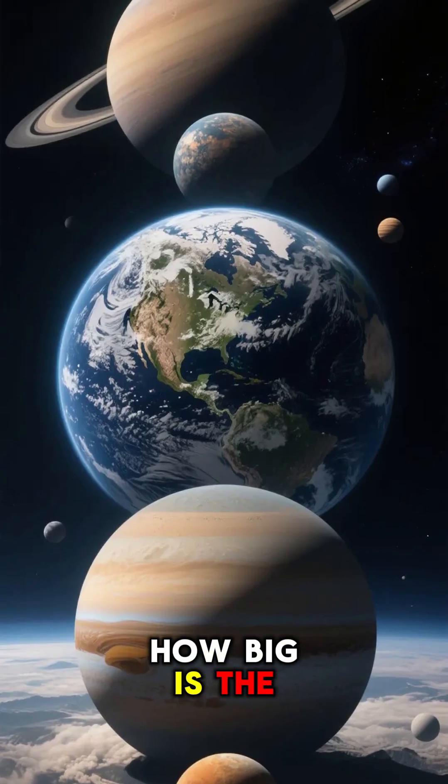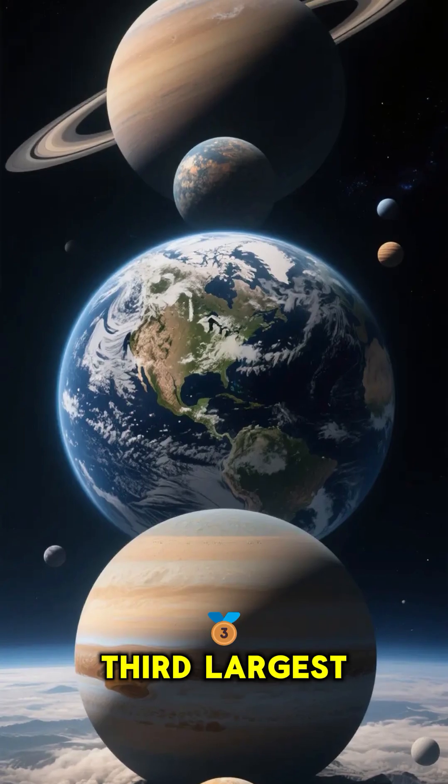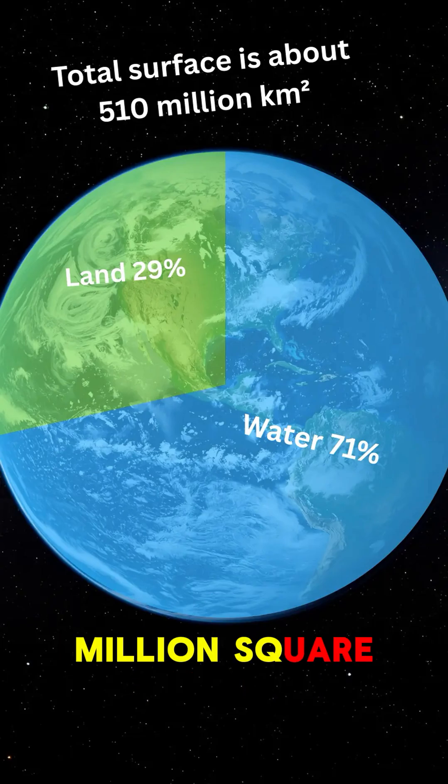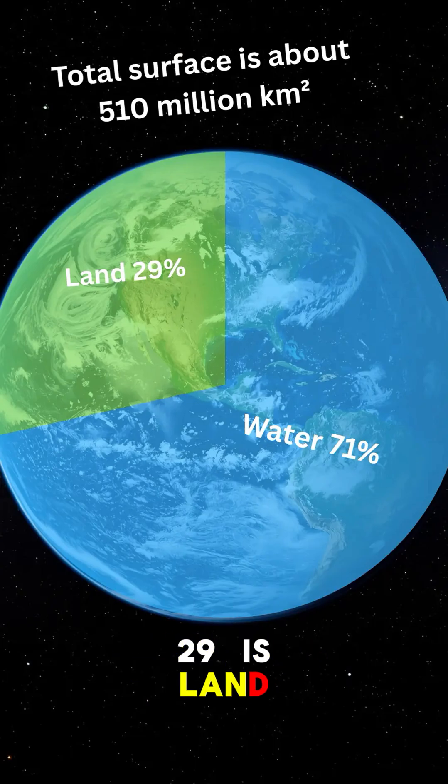How big is the Earth? The Earth is the third largest planet in the solar system. Total surface area of the Earth is about 510 million square kilometers. About 71% is covered by water, and the remaining 29% is land.